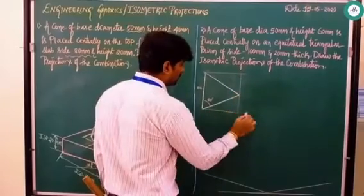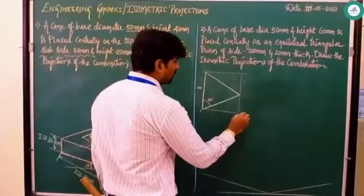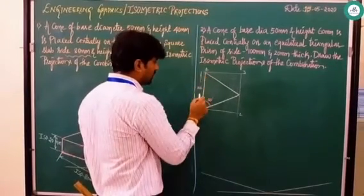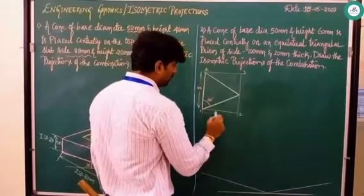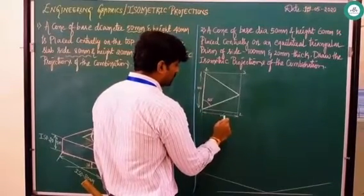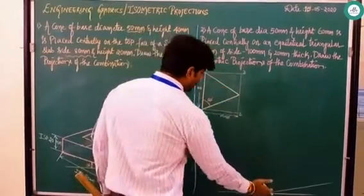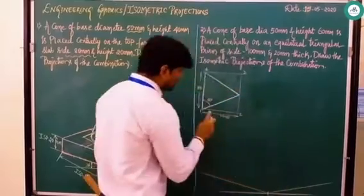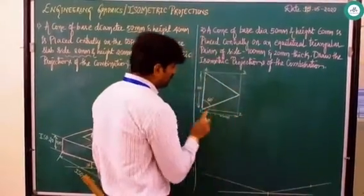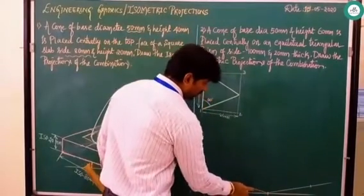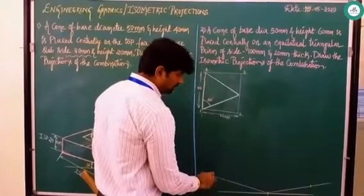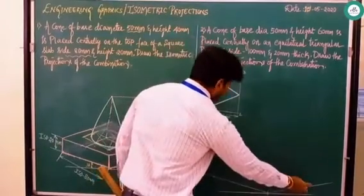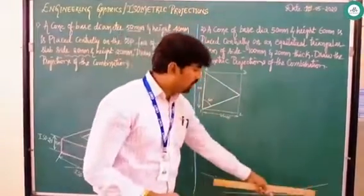Enclose the triangular prism in a box and name the corners one, two, three, and four. From one to four the dimension is 100 mm. Measure the dimension from one to two — you will get 86 mm. Transfer this box by taking one point as a reference: from one to two it is 86, count to the right side and mark point 2; and from one to four it is 100, count and mark. Project these points and complete the enclosing box.